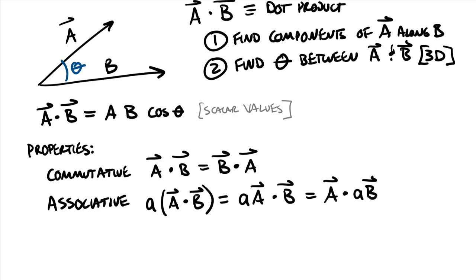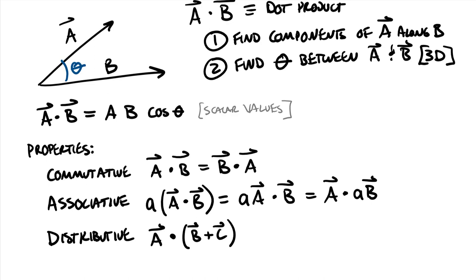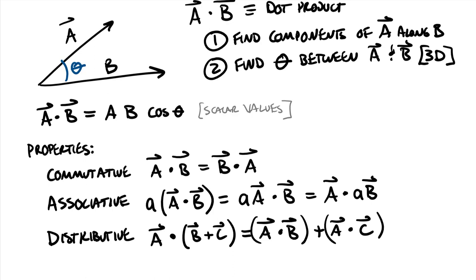The last property is that dot products are distributive, meaning if we have a dotted with the sum of two vectors b plus c, you could either add b plus c first or dot a with each of b and c individually and you'd get the same value either way.